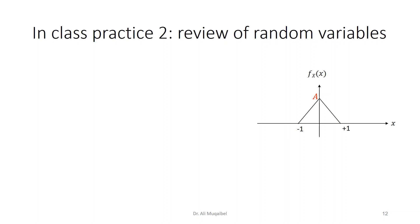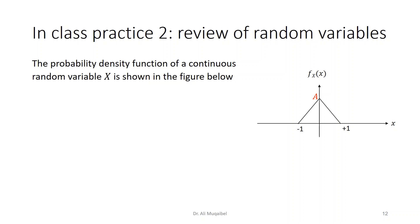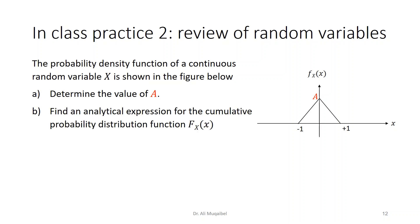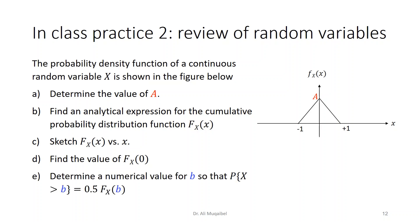This is an in-class practice: the PDF of a continuous random variable X is shown in the figure with amplitude A. Determine the value of A for the PDF to be valid. Find an analytical expression for the CDF. Sketch the CDF as a function of X. Find the value of the CDF at 0 and determine whether it makes sense. Finally, find a numerical value of B such that the probability of X greater than B equals 0.5 times the CDF at B.